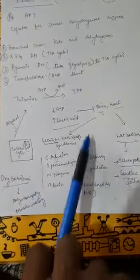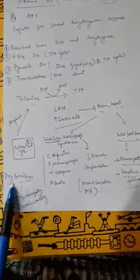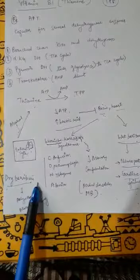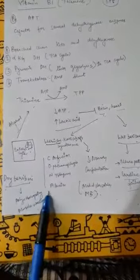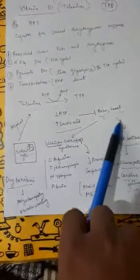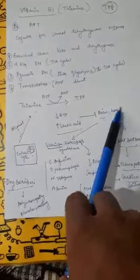As you know, it also causes dry beriberi. Dry beriberi is polyneuropathy and muscle wasting, and it also affects the heart, causing dilated cardiomyopathy.